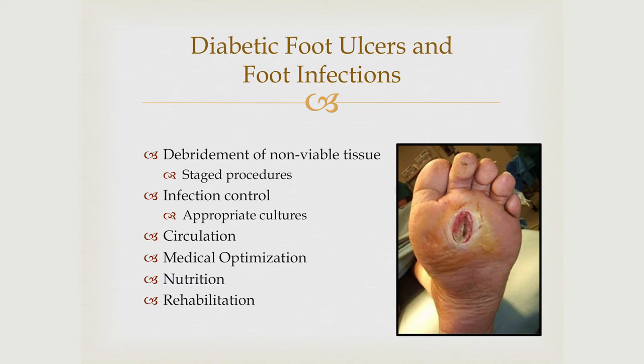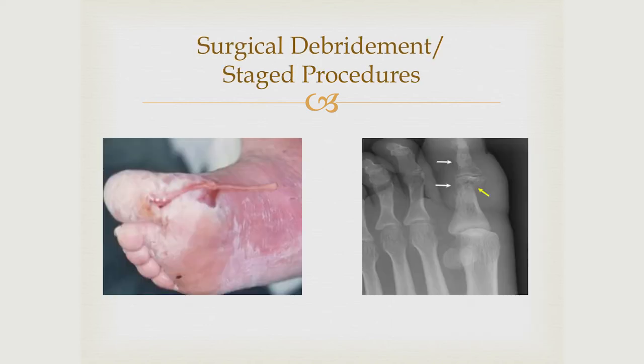Of course, looking at their circulation, optimizing them medically, nutrition consults — very important during these admissions — and taking into consideration post-amputation rehabilitation. For an acutely infected foot with pus coming out the big toe and osteomyelitis on x-ray, the first step inpatient would be to get them to the OR as soon as possible, perform the primary amputation, get them on antibiotics, and then when appropriate consult vascular. In my case, I mostly consult with Dr. Prasad, who kindly evaluated my patients and improved their flow.